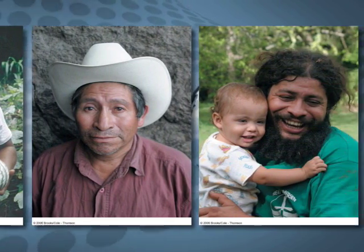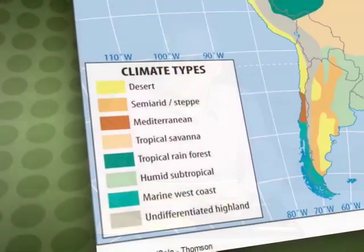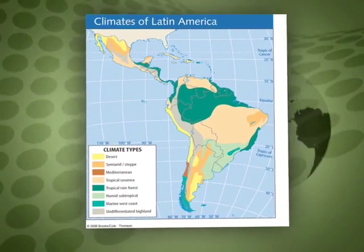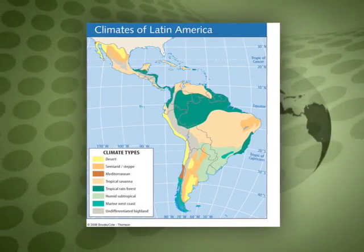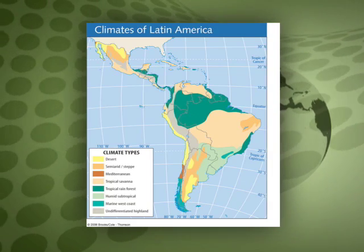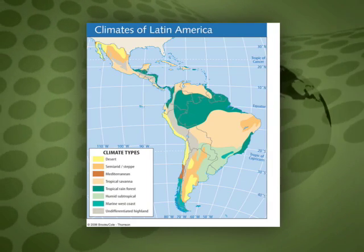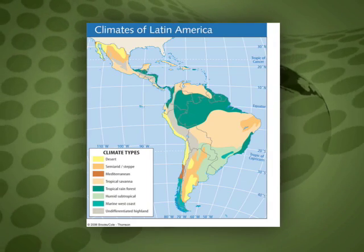From the perspective of latitude, Latin America extends from about 30 degrees north to almost 60 degrees south. As a result, just like Africa, there are areas of rainforest near the equator, deserts near the 30-degree latitude marks, and savannas in between.